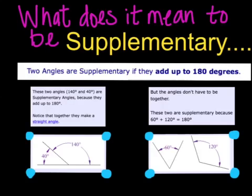What does it mean to be supplementary? Again there's a magic number that needs to be added together to get it and this number is 180 degrees. If you look at the two examples at the bottom the first one shows two angles together perfectly making a straight line at the bottom. A straight line is another way of saying 180 degrees.